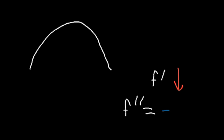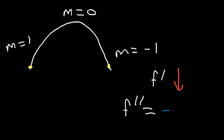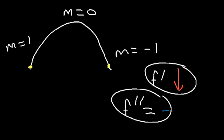Why is this shape concave down? We know the second derivative is negative, and when the second derivative is negative, the first derivative is decreasing in value — the slope is decreasing. On the left side the function is increasing so the slope is about positive one. At the top the slope is zero, and on the right the slope is roughly negative one. Traveling from left to right, the slope decreases from one to zero to negative one. Because the first derivative is decreasing, the second derivative is negative, so it's concave down.